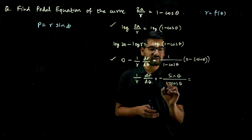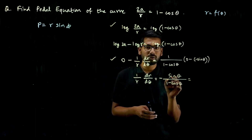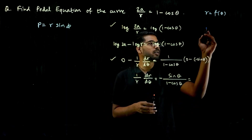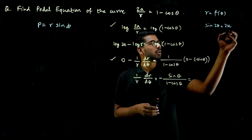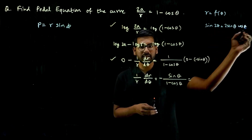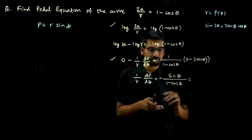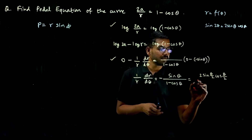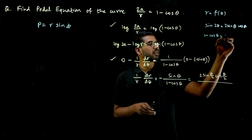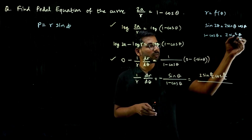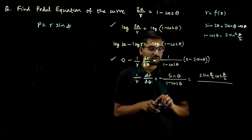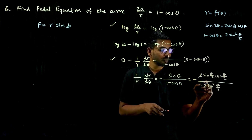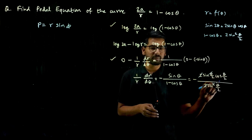We can simplify sin θ/(1 - cos θ) using the half-angle double-angle formulas — the 'god formula' because it appears everywhere. sin θ = 2 sin(θ/2) cos(θ/2), and 1 - cos θ = 2 sin²(θ/2). The 2s cancel and one sin(θ/2) cancels, leaving cos(θ/2)/sin(θ/2). So (1/r)(dr/dθ) = cos(θ/2)/sin(θ/2).